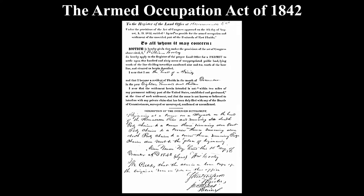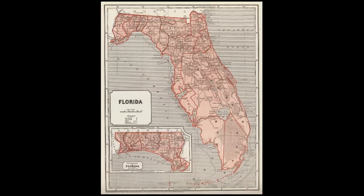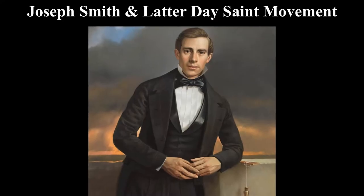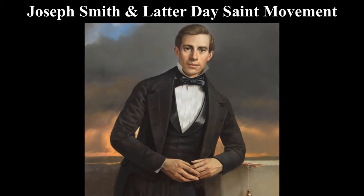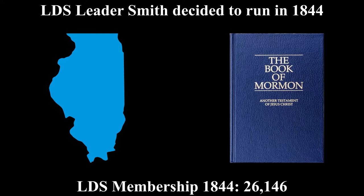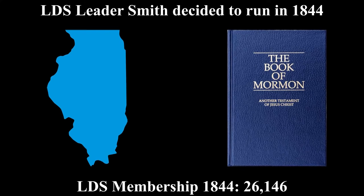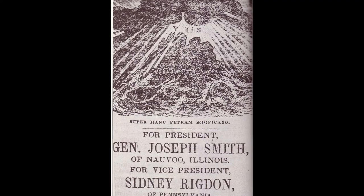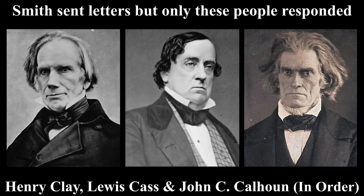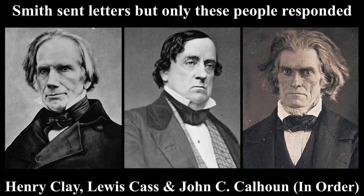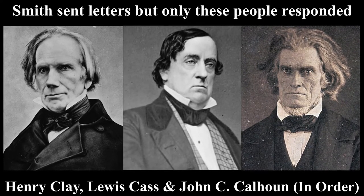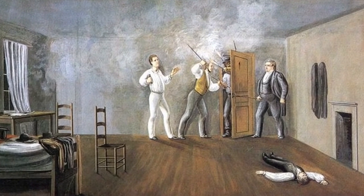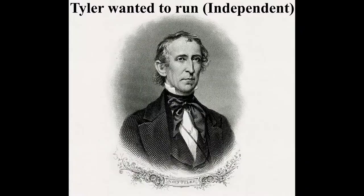After the Armed Occupation Act was signed, which made it easier for new people to settle Native American land, Joseph Smith and the Mormon movement was slowly growing. Smith, their leader, decided to run in 1844 from his homestead in Illinois, since he felt that neither party appreciated the Mormon community after he wrote to many political figures and got no response or a mediocre letter. But sadly for Smith, he would be assassinated by a mob not long after.